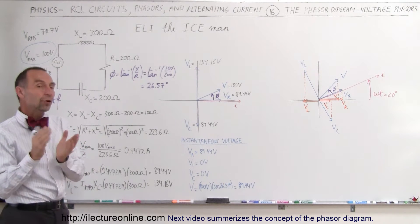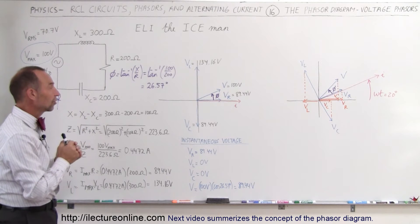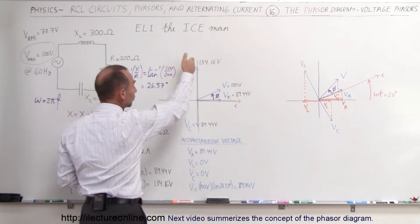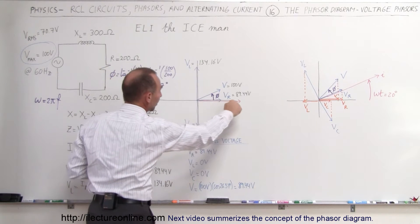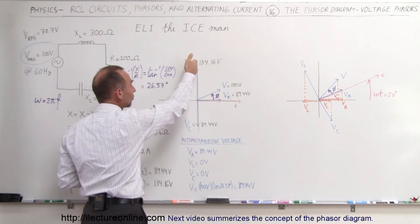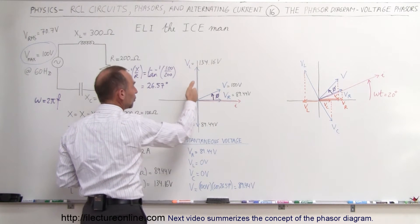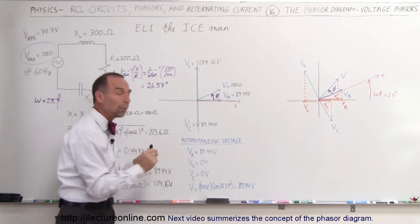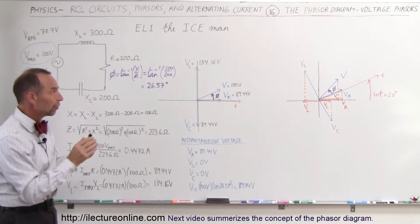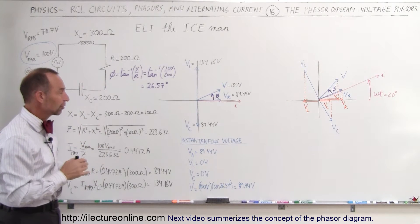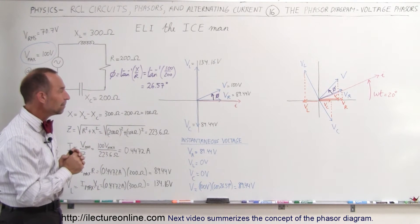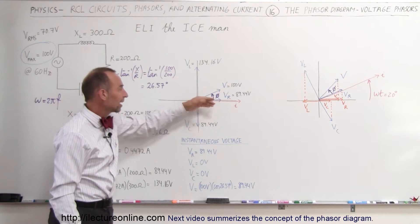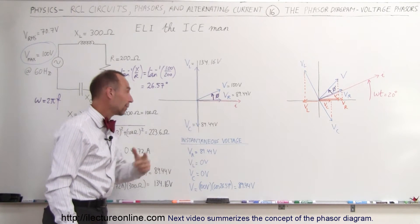Now, what are the instantaneous voltages across the circuit? Remember, when we want to find the instantaneous voltage, we project the voltages onto the horizontal axis. Right away you can see there is no horizontal component to the inductive voltage and the capacitor voltage, so those two at this very moment are equal to zero — zero volts across the inductor and zero volts across the capacitor. The voltage across the resistor, since it's along the x-axis, would be the full length of that vector.